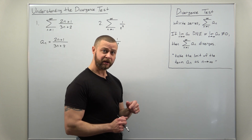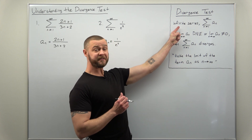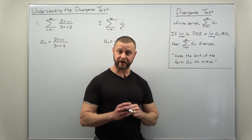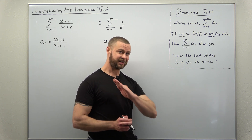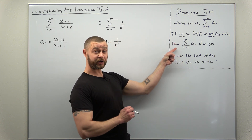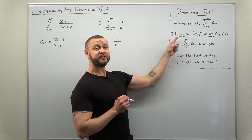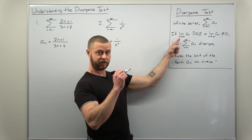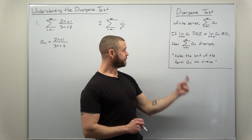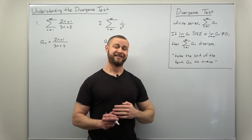Before we get to the examples, let's understand what the divergence test is. We always start with an infinite series and denote the term as a sub n — pretty standard notation. Like all mathematical theorems, the divergence test has two parts: conditions and a conclusion. The conditions are: if the limit of a sub n either does not exist or is not zero, then the conclusion is that the infinite series with term a sub n diverges.